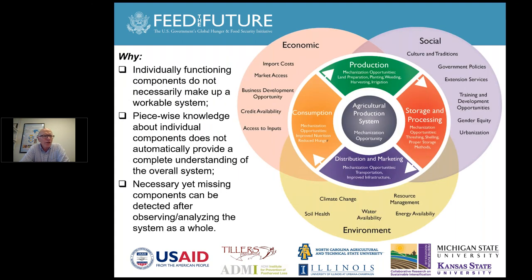Thinking about the system, there are a lot of factors that come into play — not just the technology aspects where we think about production, storage and processing, distribution and marketing. There are economic aspects such as market access, credit availability, and business opportunities. On the social side, culture and traditions are important, along with gender equity, urbanisation, and extension services. Then the environment is very important: soil health, water availability, climate change resiliency, and energy availability — all part of resource management.